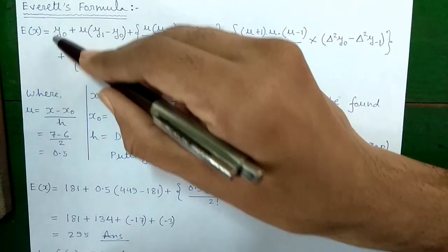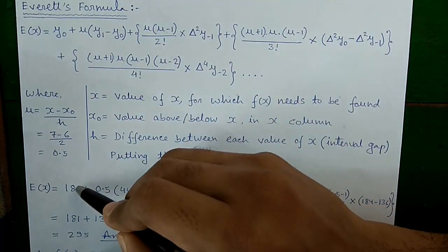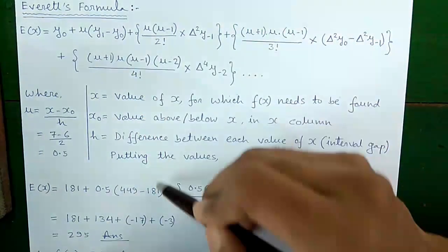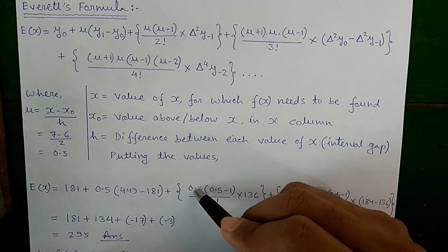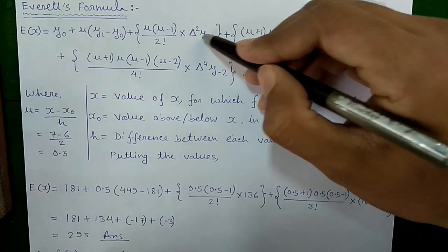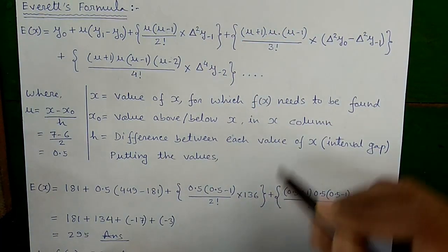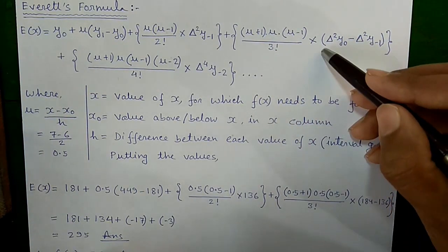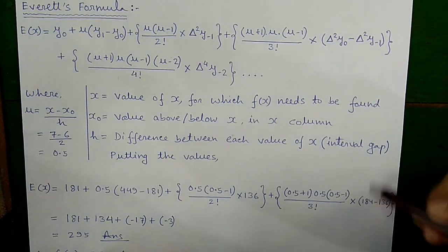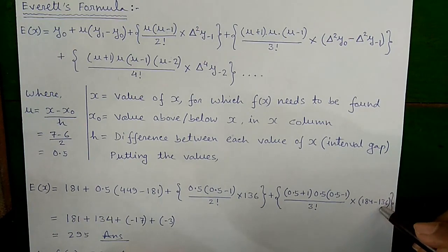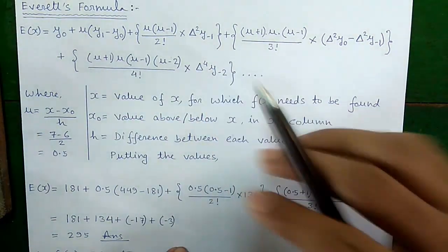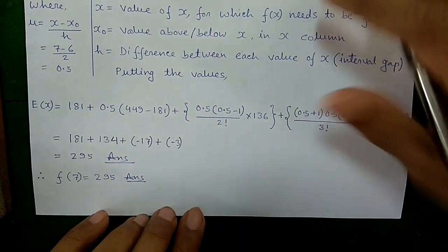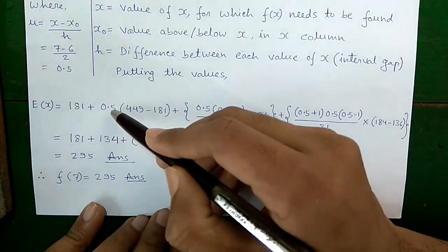Now let's substitute the values. E(x) = y₀ (which is 181) + u (0.5) × (y₁ = 449 − y₀ = 181) + u(u−1)/2! × Δ²y₋₁ (which is 136) + (u+1)u(u−1)/3! × (Δ²y₀ = 184 − Δ²y₋₁ = 136). We are not taking the fourth term since Δ⁴y is 0.